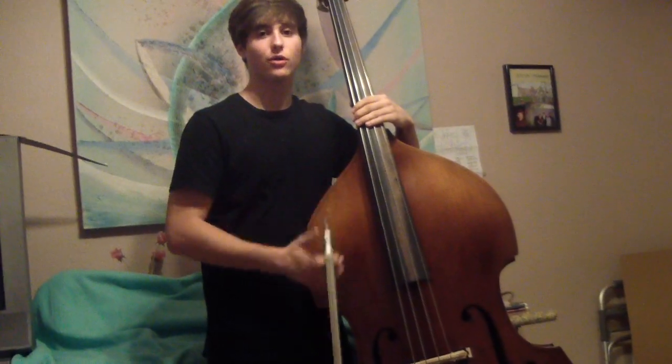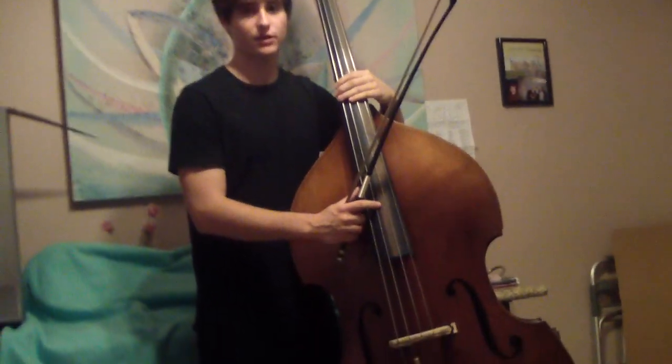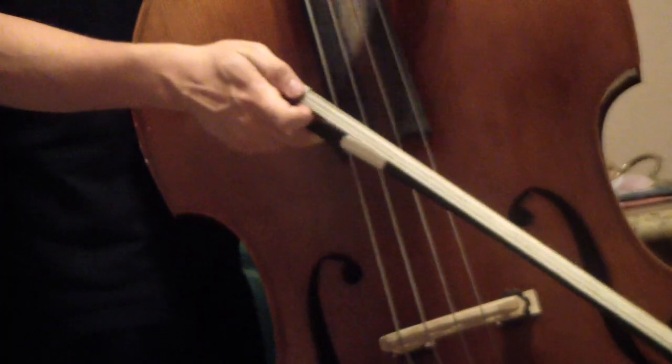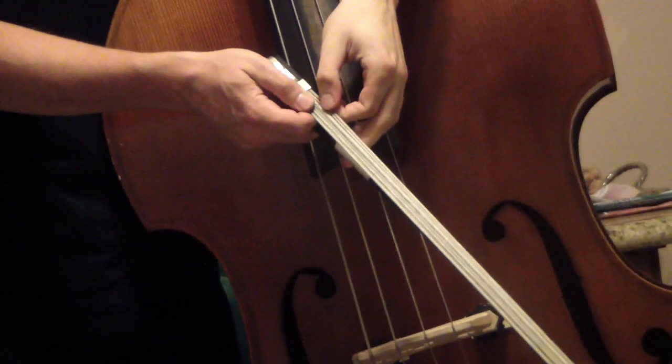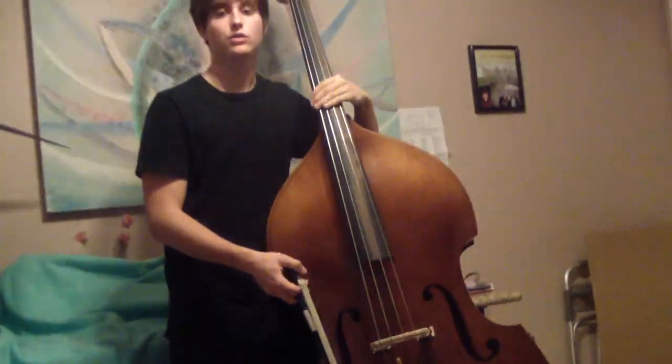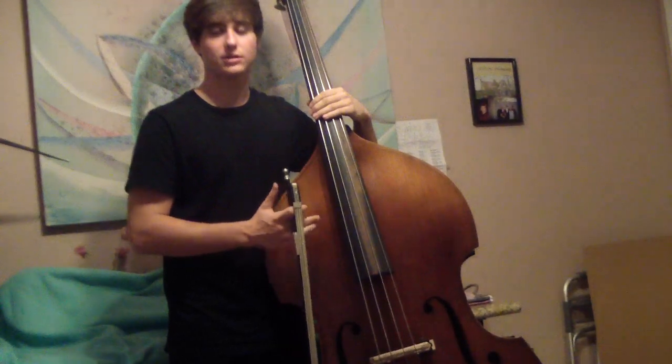When bowing, the horsehair grips the string acting similarly to the grip of a finger. The bow is made up of tightly pulled horsehair. String instrument players use rosin, a substance made of tree resin, to make the horsehair sticky.